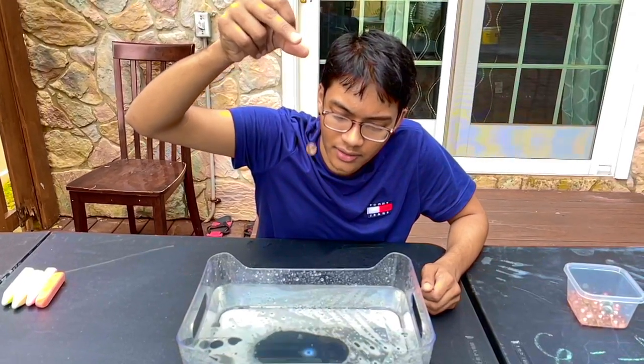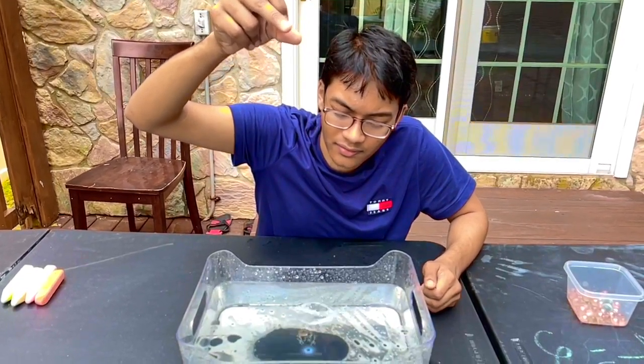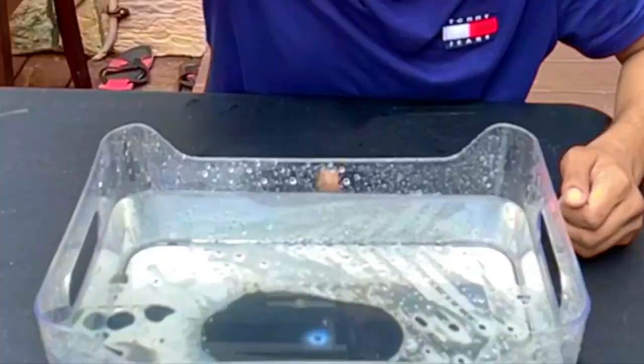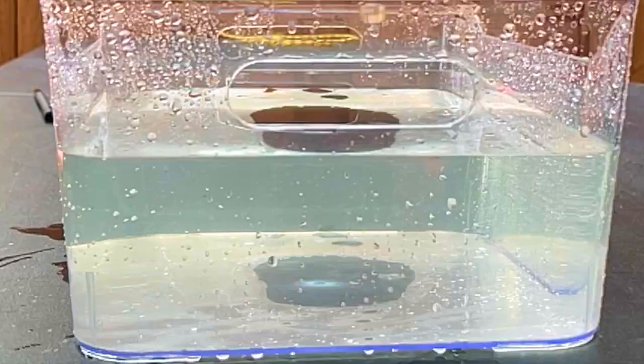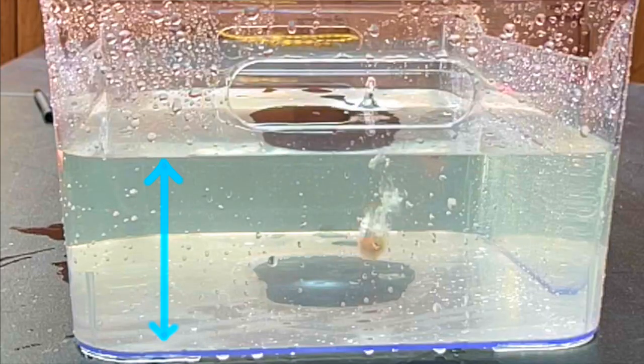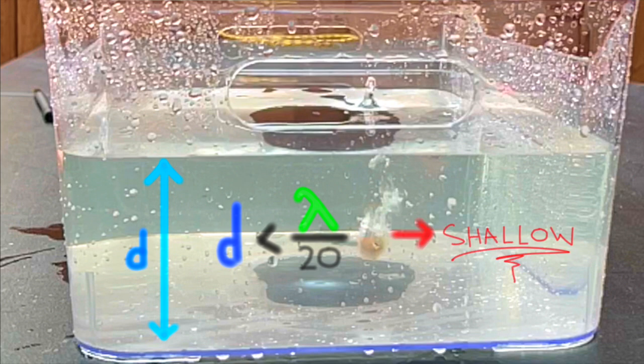The marble created some waves in my container. If my container has a depth, let's call it D, and that depth is less than 5% of the wavelength of my water waves, then it's a pretty shallow water wave.